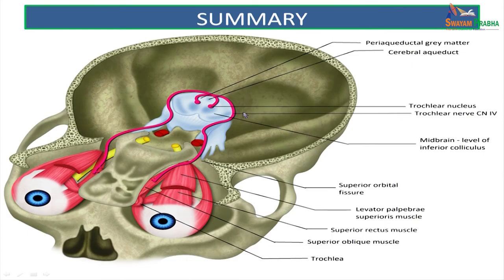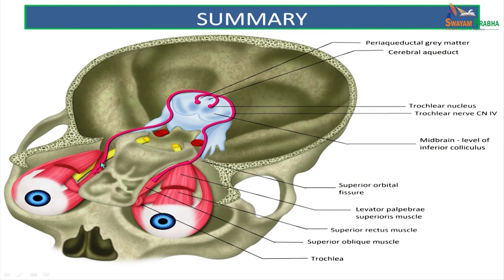Summary of the fourth cranial nerve: the nucleus is at the level of the inferior colliculus at the floor of the aqueduct. It passes backwards, decussates at the anterior medullary velum, winds round the midbrain and the basis pedunculi, passes in the interpeduncular fossa between the posterior cerebral artery and the superior cerebellar artery, and lateral to the posterior clinoid process enters the cavernous sinus in its lateral wall — related to the oculomotor nerve in front and the ophthalmic nerve behind — then enters via the lateral compartment of the superior orbital fissure to supply the superior oblique muscle.